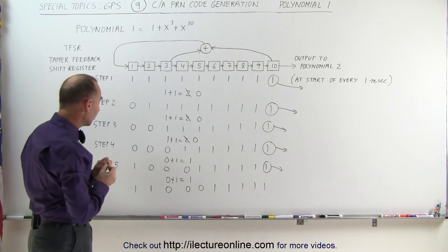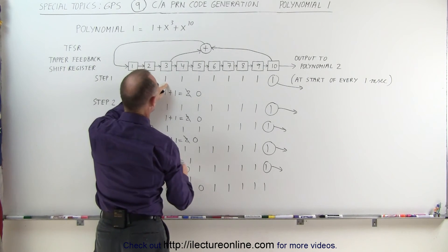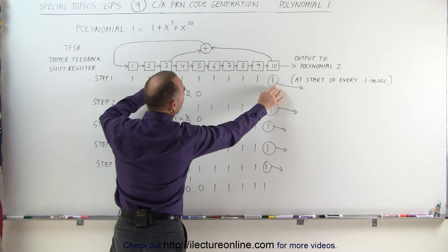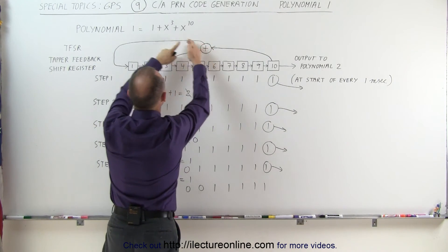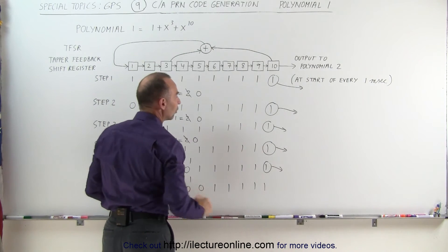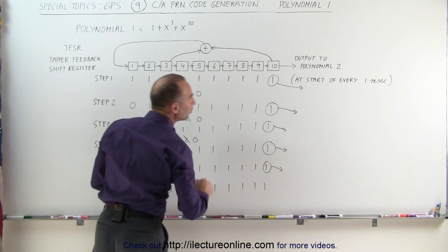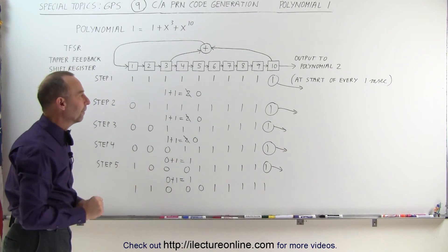And that then gets repeated 1,023 times, each time summing up what the contents are in location 3, contents in location 10. They get summed together. Whatever that result is will go into register 1 and everything gets shifted over. Whatever is in position 10 will then get sent to polynomial 2 to get processed there.